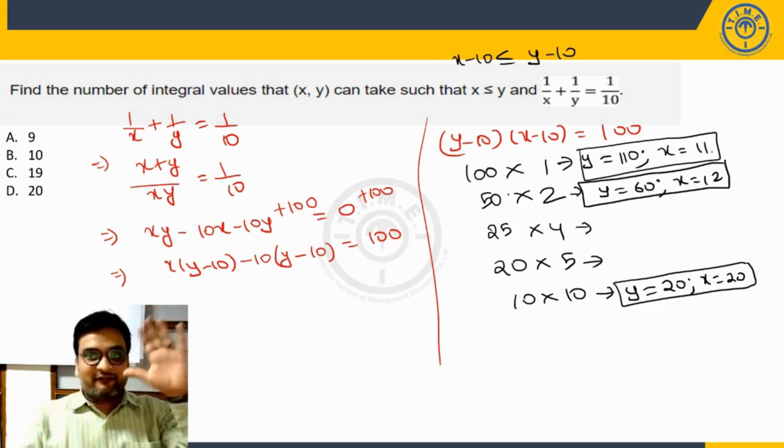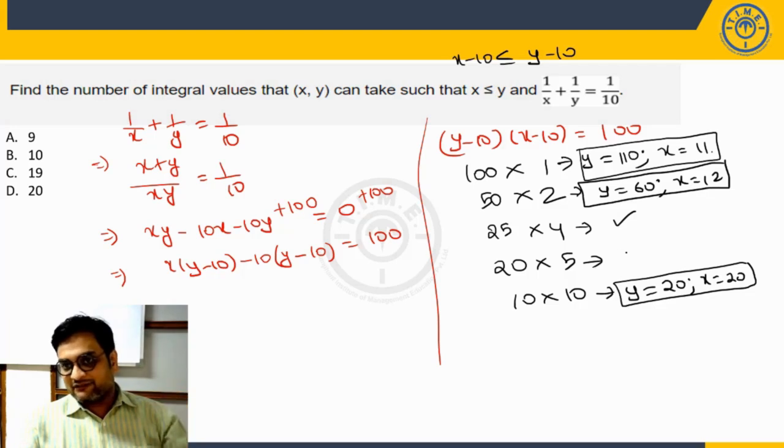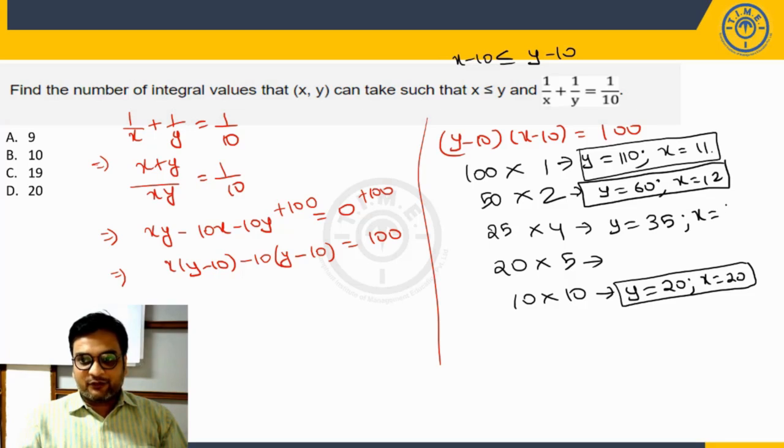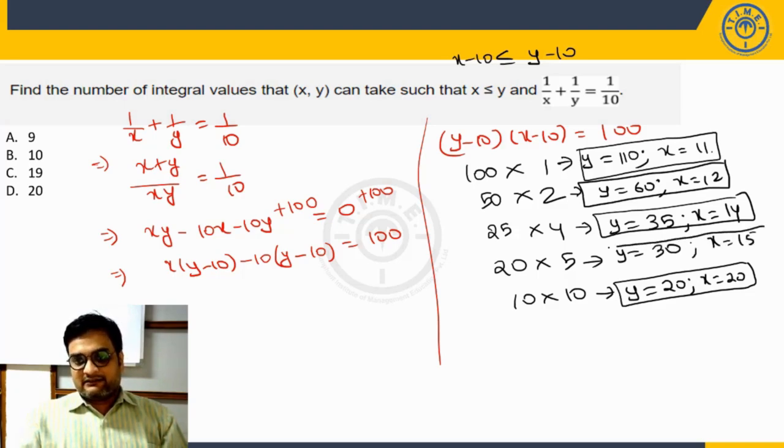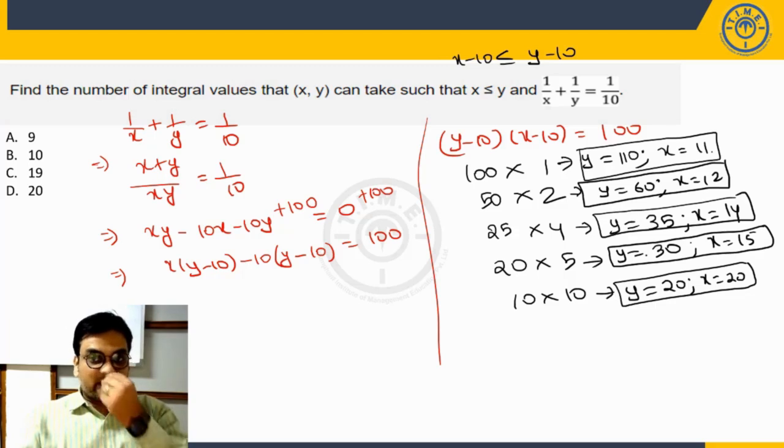So far we got 5 solutions. One more here which I am not writing, I hope you can write it down yourself. x equal to 10 plus 4, 14. Here, y equal to 20 plus 10, 13, x will be equal to 15. These are the 5 solutions.